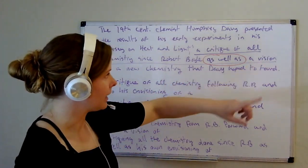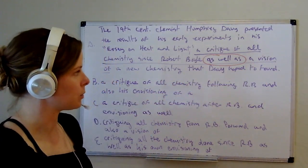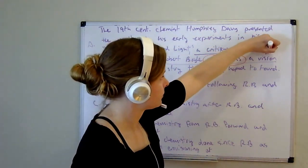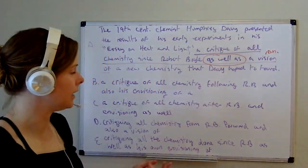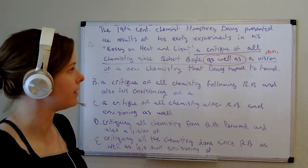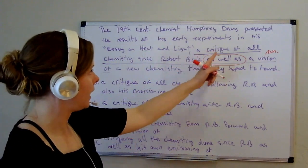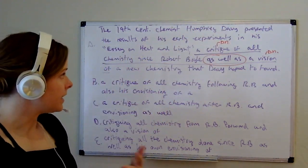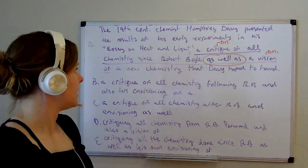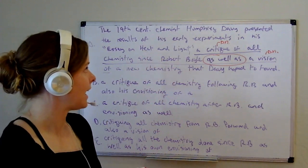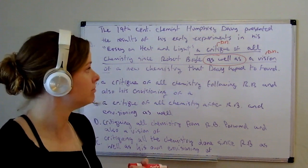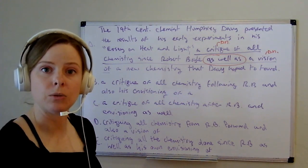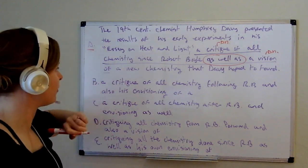As always, we're looking immediately after our parallel marker 'as well as,' and we have 'a vision' — this is a noun. Earlier in the sentence, do we have a noun that could be parallel with 'vision'? Yes — 'a critique.' Another noun. These are two nouns that both seem to stand in for this essay that Humphrey Davy has written — makes sense and is grammatically parallel. So everything's looking good with A. Let's leave that in.